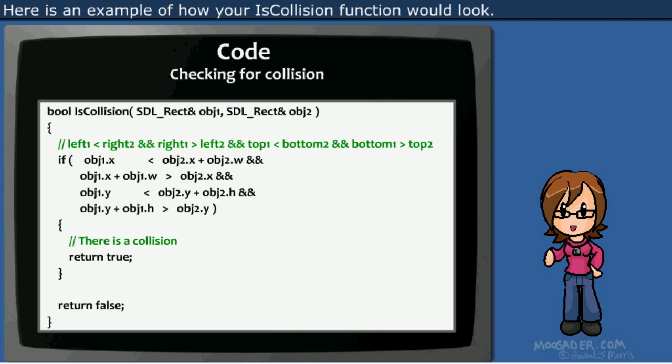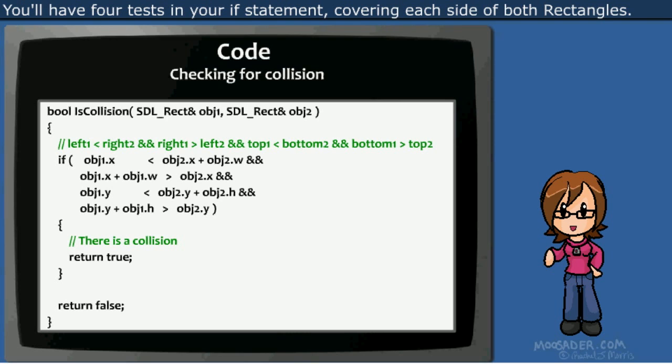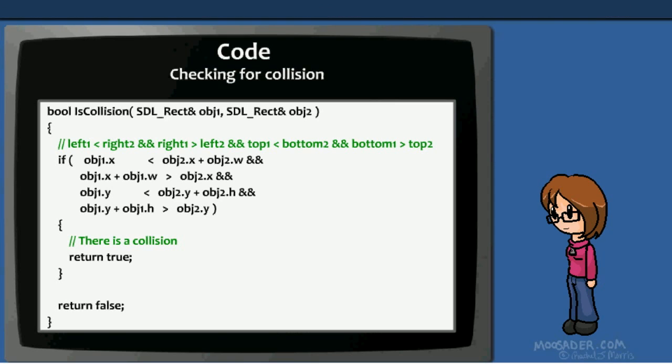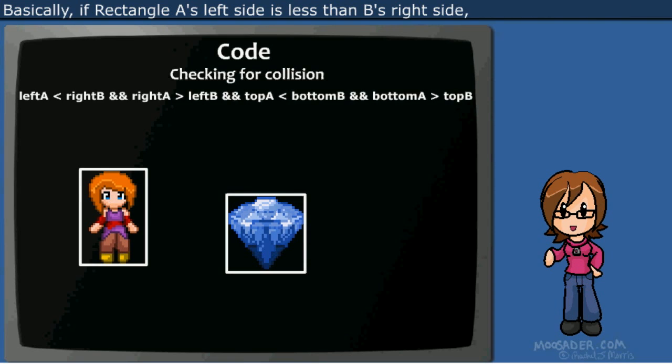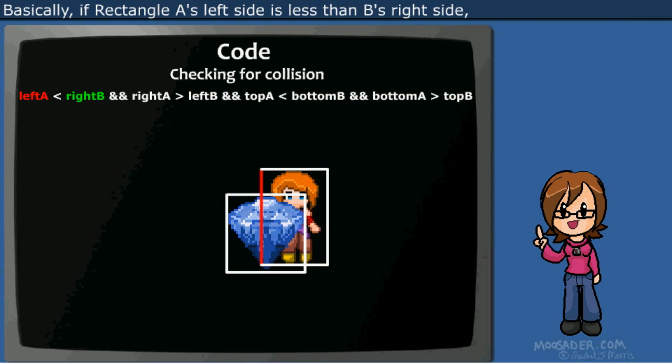Here's an example of how your isCollision function would look. You'll have four tests in your if statement covering each side of both rectangles. Basically, if rectangle A's left side is less than B's right side, then it's possible that there might be a collision.